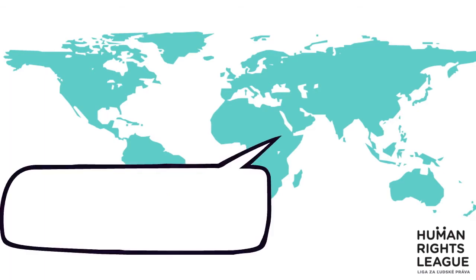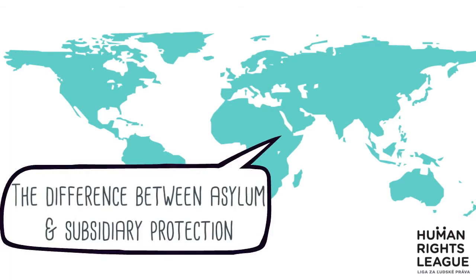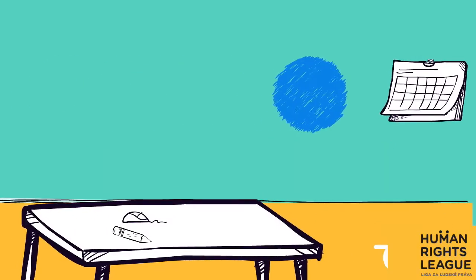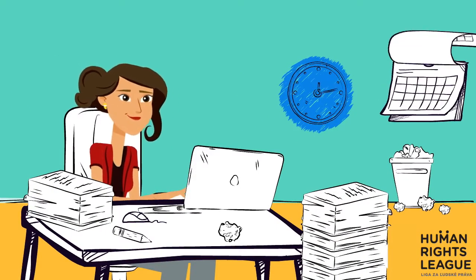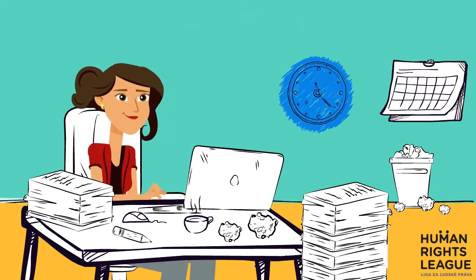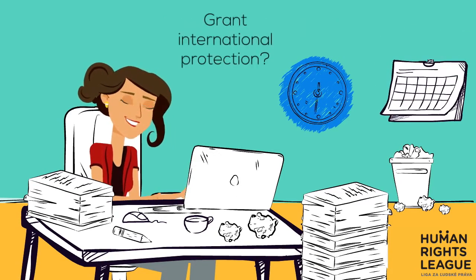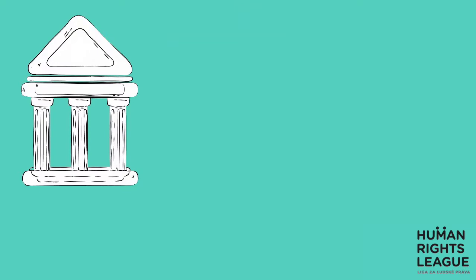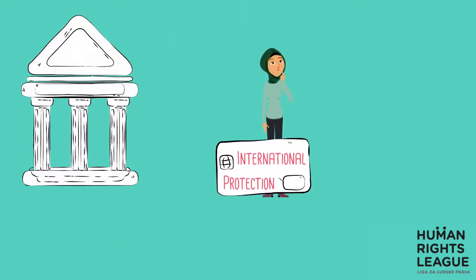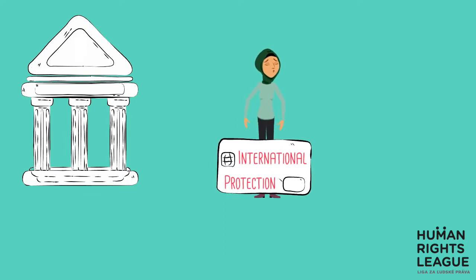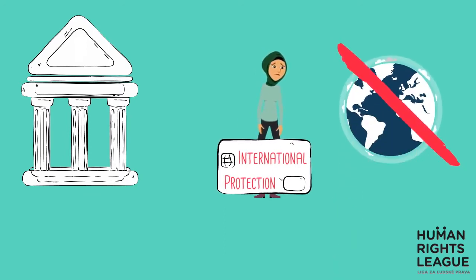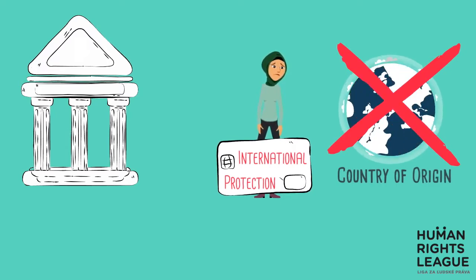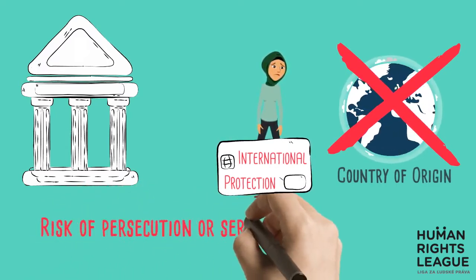What is the difference between asylum and subsidiary protection? The asylum procedure is the general procedure administered by the Slovak Migration Office, where they will assess whether you have reasons to be granted international protection. In general, international protection is granted to foreigners who have lost protection from their own country, and they cannot or do not want to return to their country of origin due to the risk of persecution or serious harm.